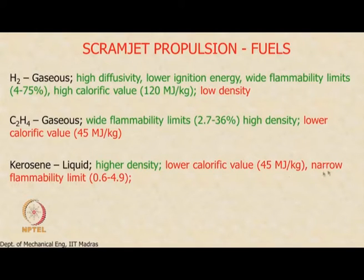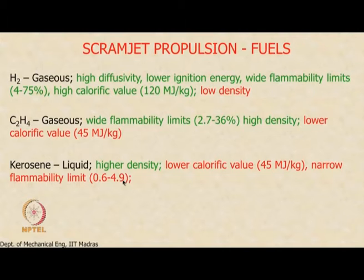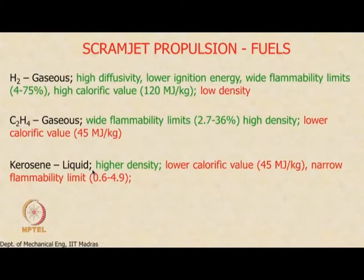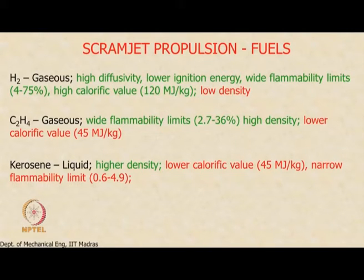The major disadvantage of kerosene is that it has a very narrow flammability limit — compare 2.7 to 36% by volume for ethylene versus only 0.6 to 4.9% by volume for kerosene. If the mixture is above or below this range, it will not burn. So the range is very narrow, which means if you use kerosene as a fuel in your scramjet engine, the most crucial aspect becomes mixing — you need to ensure the fuel is mixed in stoichiometric proportions across the entire cross-section of the combustor.